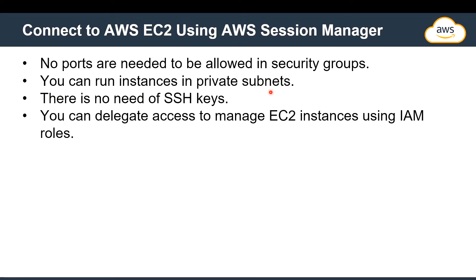AWS Session Manager gives you extra security for your EC2 instance because no ports need to be allowed in the security group. Previously, for Linux you'd allow SSH on port 22, and for Windows you'd allow RDP on port 3389. With Session Manager you don't have to allow anything, and you can run instances in a private subnet. Importantly, you don't need any SSH keys — access is delegated via IAM roles.